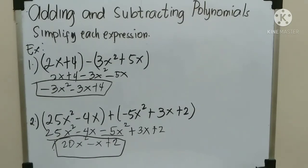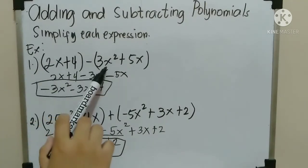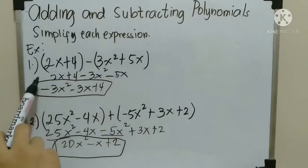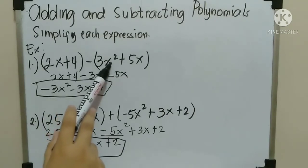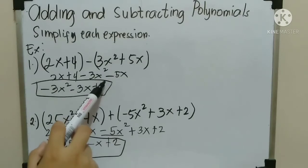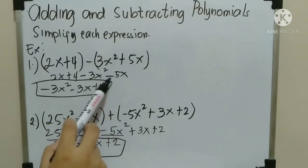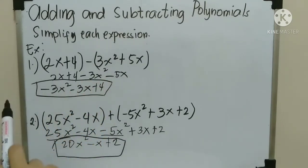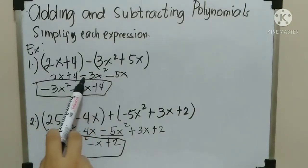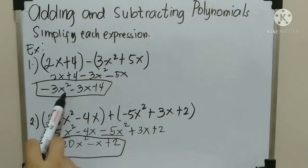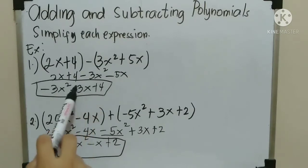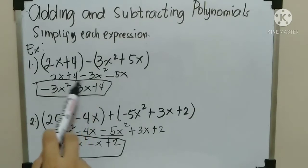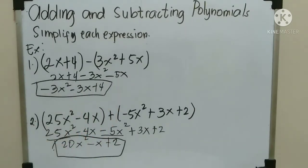Let me repeat. Number 1: (2x + 4) minus (3x² + 5x). Copy 2x plus 4 minus. Multiply: negative times positive 3x squared — negative 3x squared. Negative times positive 5x — negative 5x. Combine like terms: negative 3x squared has no pair, so copy it. 2x minus 5x — negative 3x. Plus 4 has no pair, copy it. Therefore, the answer is negative 3x squared minus 3x plus 4.